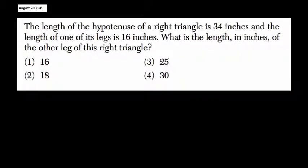Okay, so we're given the dimensions of a right triangle in this problem, and when that happens I usually like to sketch out the triangle. They tell us the hypotenuse is 34 inches, and one of the legs is 16 inches. They want to know what is the other leg equal.